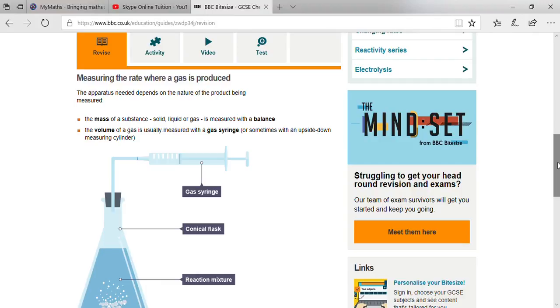Firstly, the mass of substance—that means either that is solid, liquid, or gas—measured with a balance. Secondly, the volume of gas that is generally measured with a gas syringe or something with upside down displacement of a measuring cylinder.